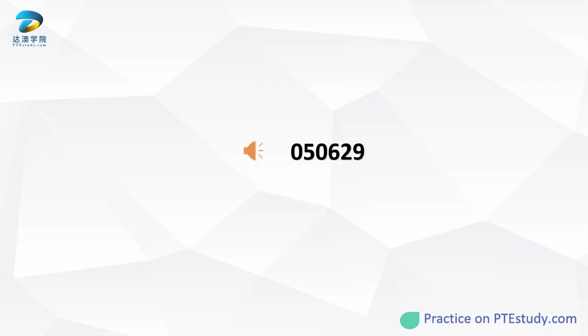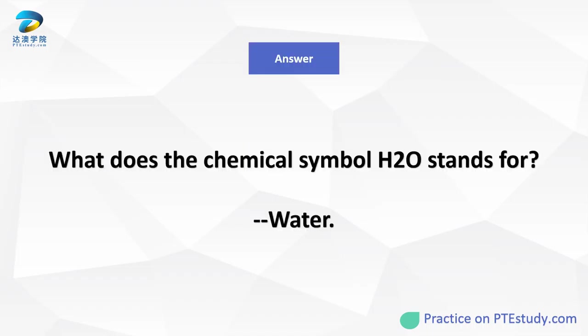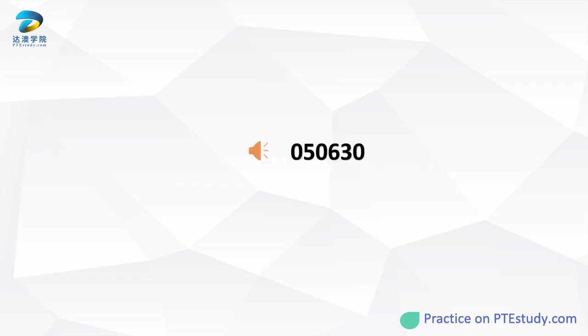What is the chemical symbol H2O? A newspaper is published every day and a journal is published every month. What do you call a publication that is published four times a year?